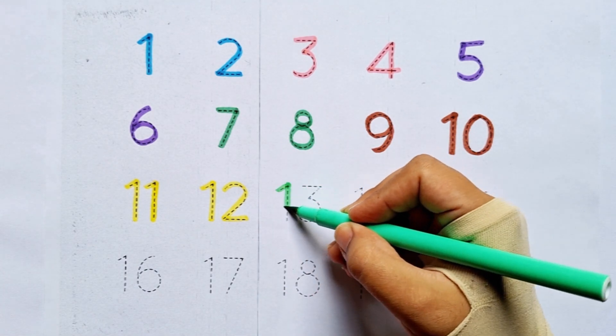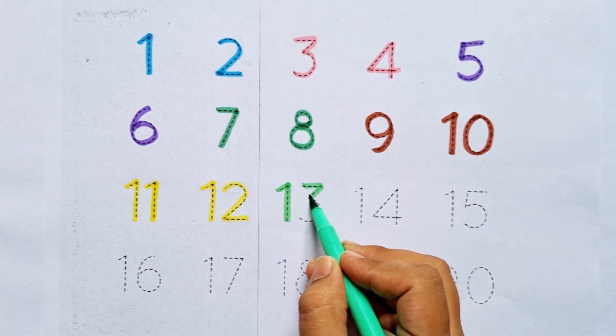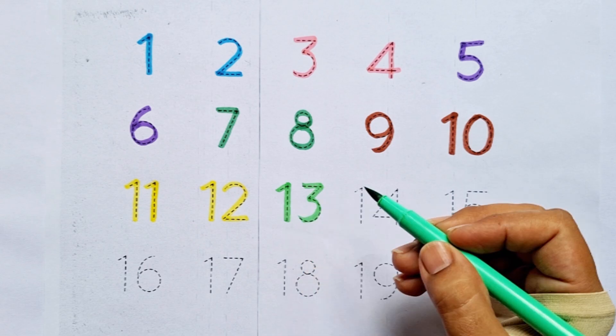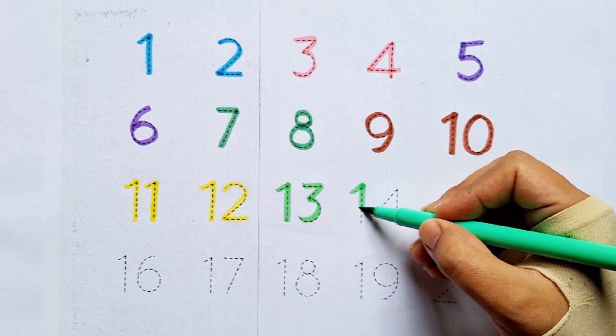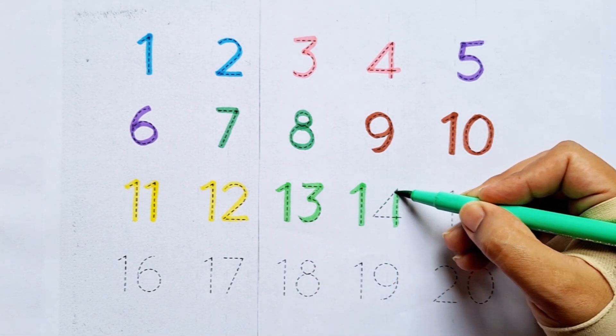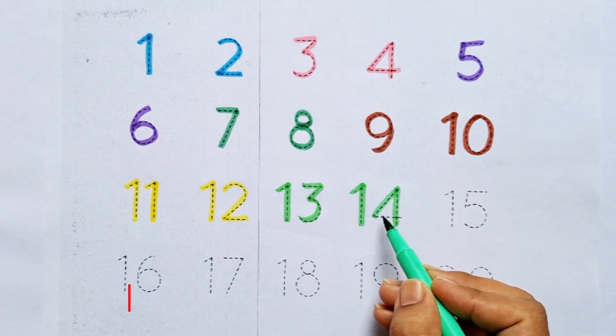Thirteen: one, three. Thirteen. After twelve comes thirteen. Fourteen: one, four. Fourteen. After thirteen comes fourteen.